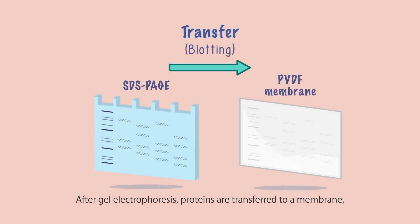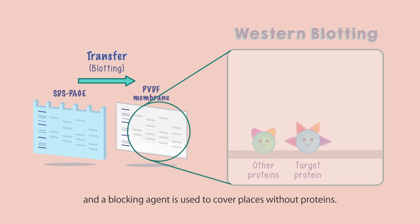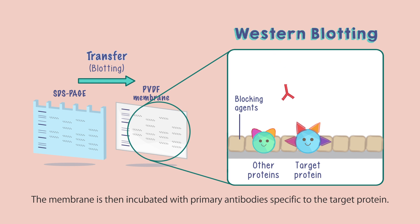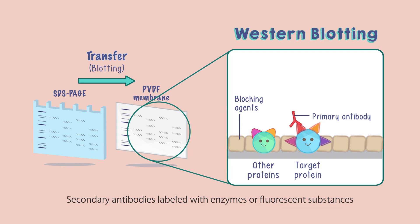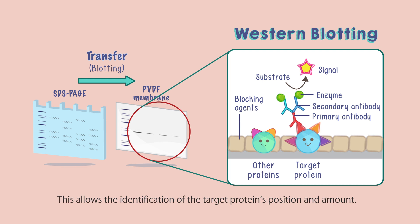After gel electrophoresis, proteins are transferred to a membrane and a blocking agent is used to cover places without proteins. The membrane is then incubated with primary antibodies specific to the target protein. Secondary antibodies labeled with enzymes or fluorescent substances are then used to recognize the primary antibodies and produce signals, allowing identification of the target protein's position and amount.